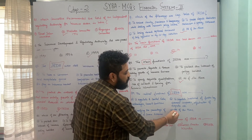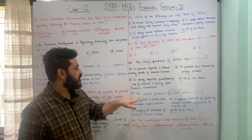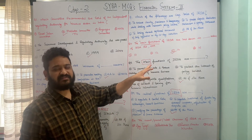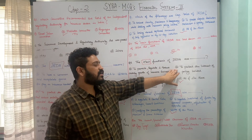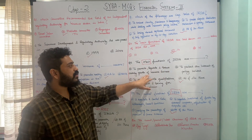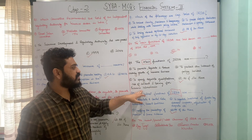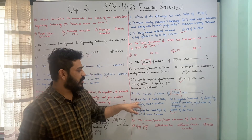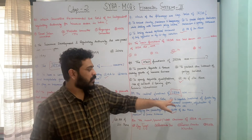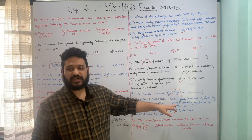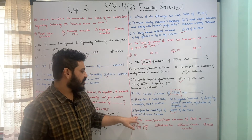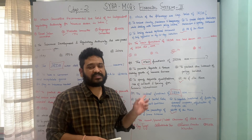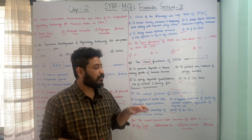With questions eight and nine, we have covered six important functions of IRDA: to protect the interest of policyholders; to promote, regulate and ensure orderly growth of insurance business; to specify requisite qualifications, code of conduct and training for insurance intermediaries; to regulate and control rates, advantages, terms and conditions; to regulate investment of funds by insurance companies and adjudication of disputes; and to specify the percentage of premium to finance schemes.